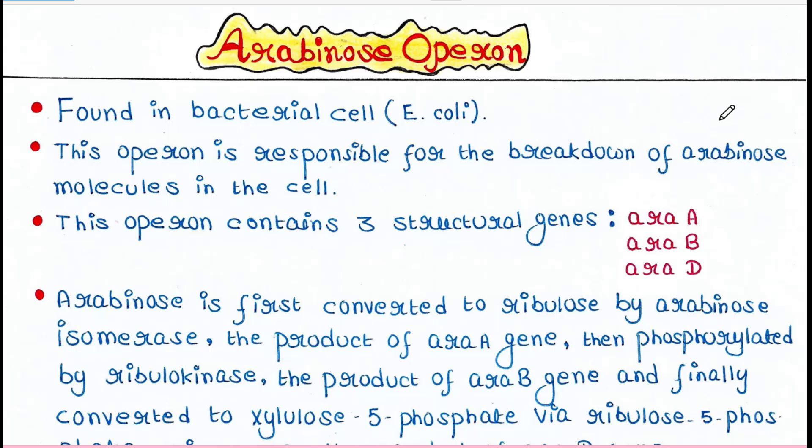We know that the operon is found in bacterial cells like E. coli. The operon system works only in prokaryotes, not in eukaryotes. This operon is responsible for the breakdown of Arabinose molecules in the cell. Arabinose is a sugar, and this operon is required to break it down.